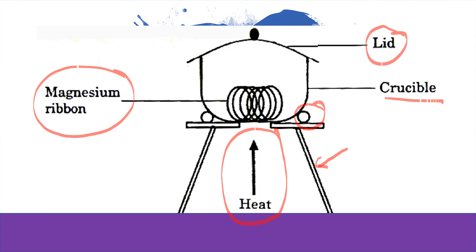After heating, the magnesium color changes from grey to white, meaning the reaction is done. Stop heating and let the magnesium cool. After the crucible and magnesium cool, weigh the crucible, magnesium, and lid.